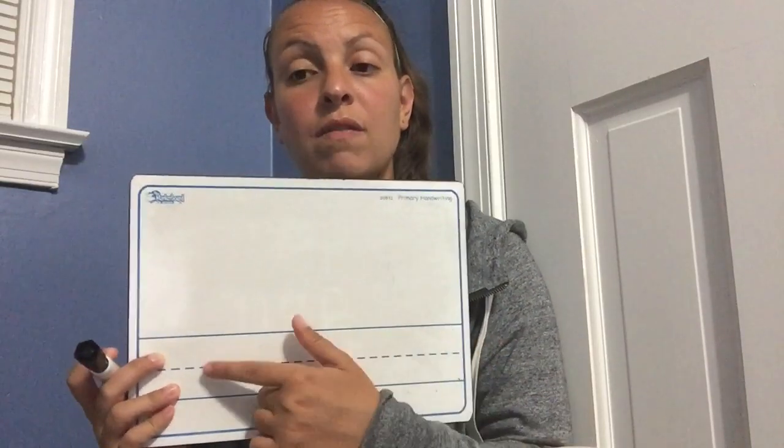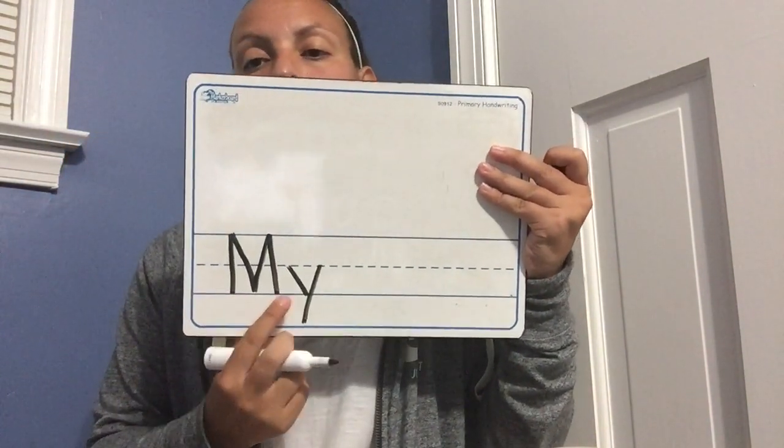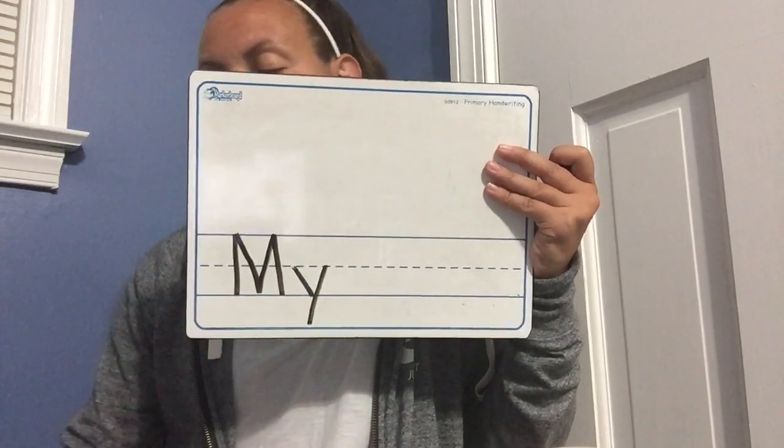Okay, so now that you have your copybook and everything you need, you're going to find a clean page. You might be open to that page. On the first line — you're going to have a top line, a dotted line, and a bottom line — on the first line in your copybook, you're going to start your sentence. And remember, we always start sentences with a what kind of letter? Uppercase or lowercase? An uppercase letter. So our first word is 'my.' I'm going to write uppercase M, and then a lowercase Y. You can write that in your copybook.